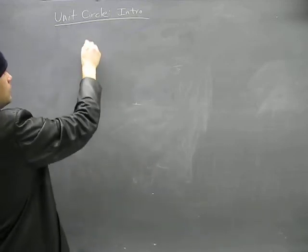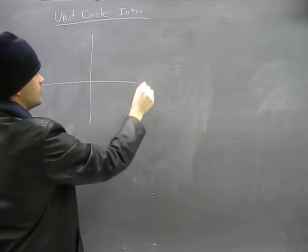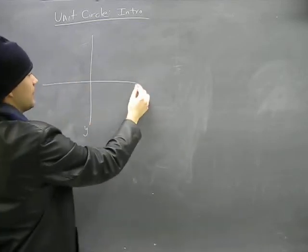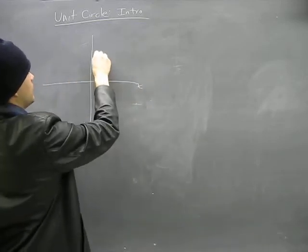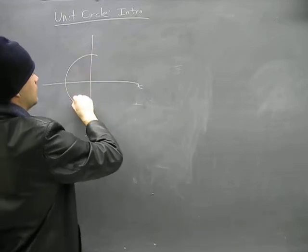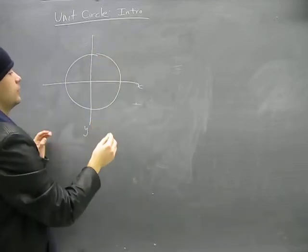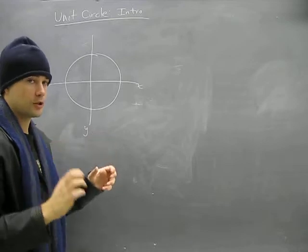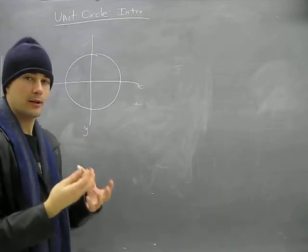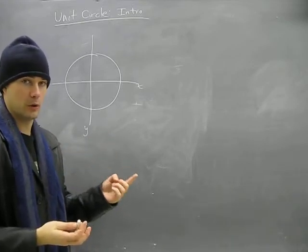A unit circle - what that is, first of all, let us draw our Cartesian plane, and draw a circle here. Now, this circle is called the unit circle. When we break things down to a unit, we're talking about the unit one, usually.